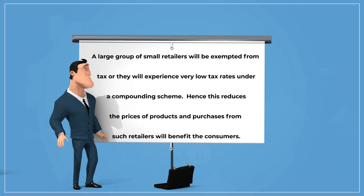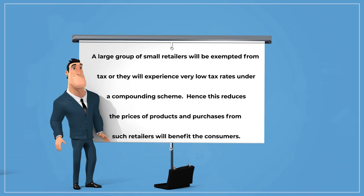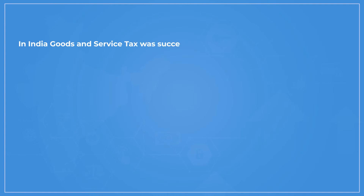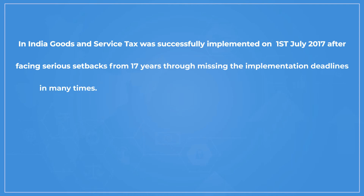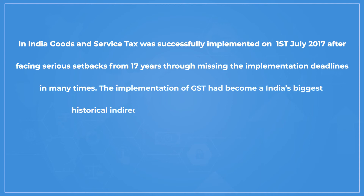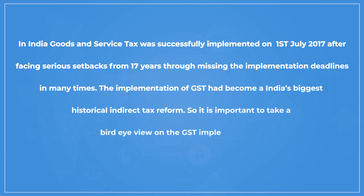This in turn helps decrease the average tax burden on companies. Let us now see the GST implementation roadmap in India from 2000 to 2017. Goods and services tax was successfully implemented on 1st July 2017 after facing serious setbacks over 17 years, including missing implementation deadlines many times. The implementation of GST became India's biggest historical indirect tax reform, making it important to take a bird's eye view of the GST implementation roadmap.